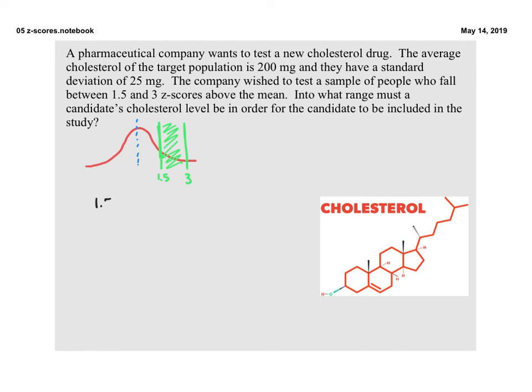So we're going to start with a z-score of 1.5 and we're looking for x in this case. We do have the average, which is 200. And we have the standard deviation, which is 25. So we'll do a little two-step equation here. We'll take 1.5 times 25. That gives us 37.5 equal to x minus 200.